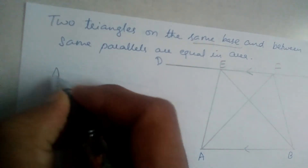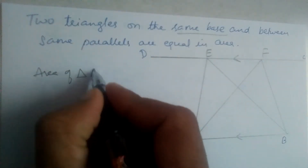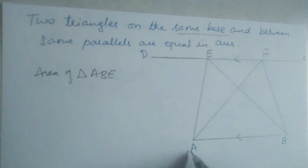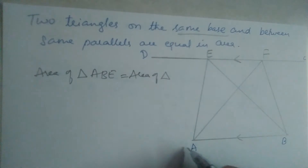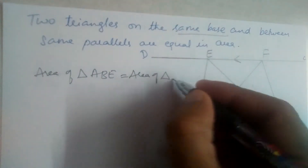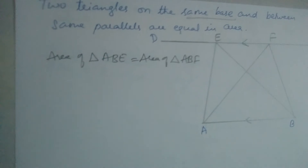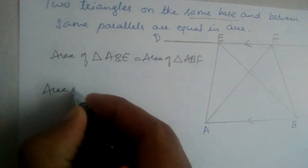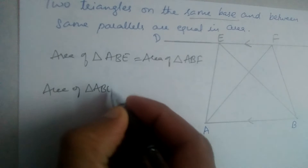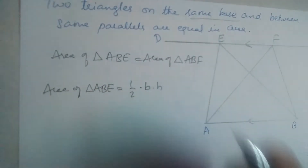According to this theorem, we should prove that area of triangle ABE is equal to area of triangle ABF. So first, let us find the area of triangle ABE — it is half into base into height.